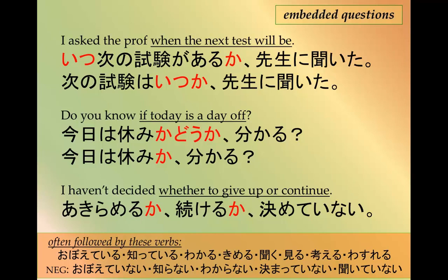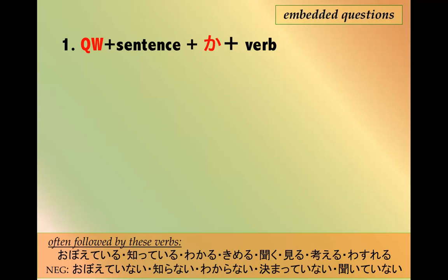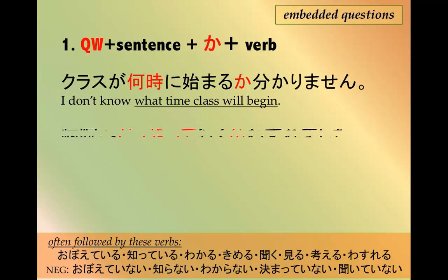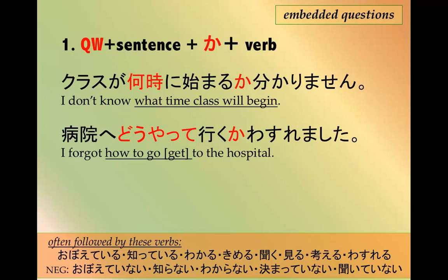Let's look at the patterns. Pattern one: question word + sentence + か + verb. For example: クラスが何時に始まるかわかりません — 'I don't know what time class will begin.' It's クラスが何時に始まるか, and then you add the verb わかりません. Another example: 病院へどうやって行くか忘れました — 'I forgot how to get to the hospital.' どうやって is the question word meaning 'how to.'